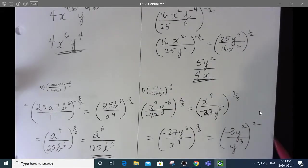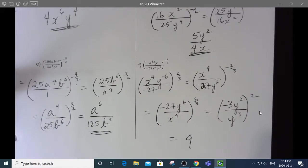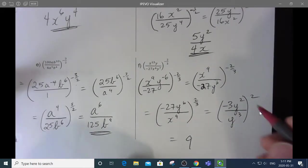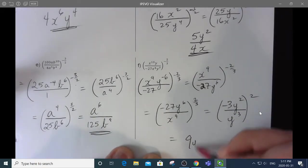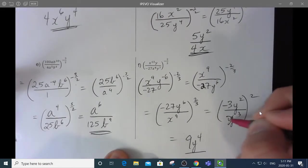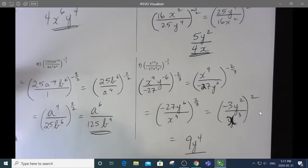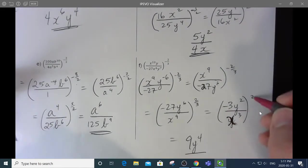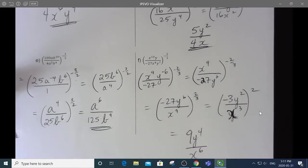So, negative 3 squared is positive 9, so the negative ended up going away. Negative 3 squared is positive 9, and y to the 2 to the 2 is y to the 4, and wait a minute. This should be an x, not a y. That's a copy error. Sorry about that. And then x cubed squared is x to the 6. And there we go.